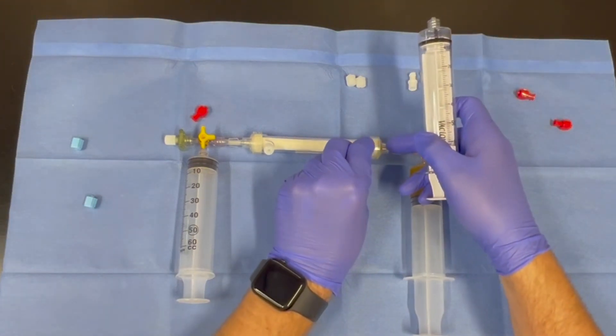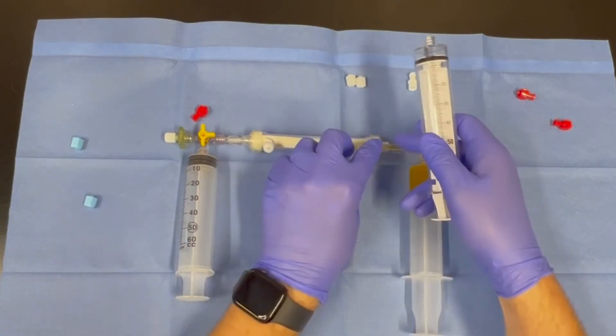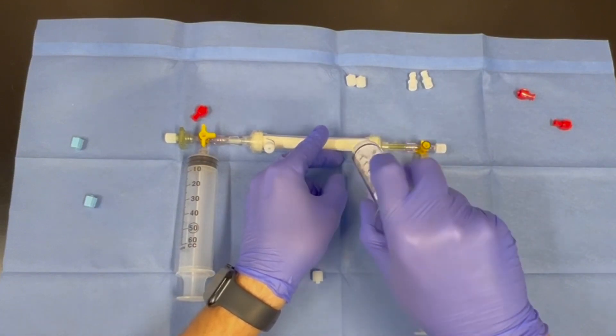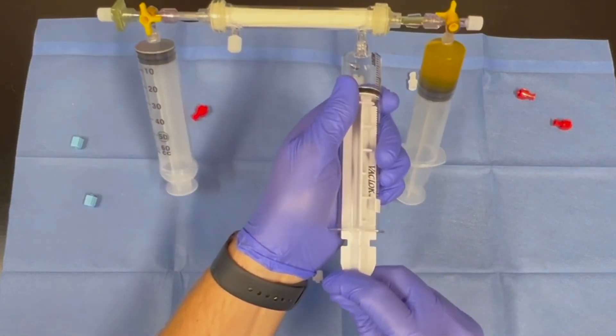Next, remove one of the white caps on the bottom of the filter and attach the primed vac lock syringe. Once the vac lock syringe has been attached, pull the plunger back and engage the vac lock syringe.